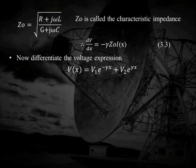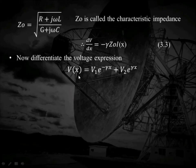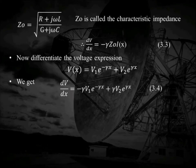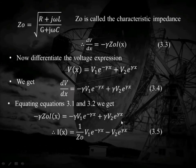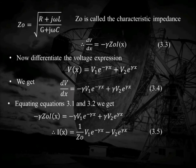Similarly, we have the equation V(x) equal to V1 e to the power minus gamma X plus V2 e to the power gamma X, named as equation 3.1. By differentiating this equation, we get dV/dx. Equations 3.3 and 3.4 have the same left-hand side, so by equating them, I get a relation for I(x) in terms of V1 and V2. My I(x) comes out to be (1/Z0) times (V1 e^{-gamma X} minus V2 e^{gamma X}), named as equation 3.5.